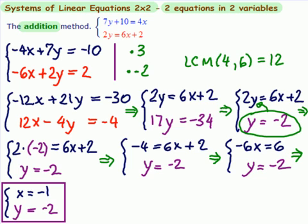If we write it as an ordered pair, here, we have minus 1 minus 2, x and then y.